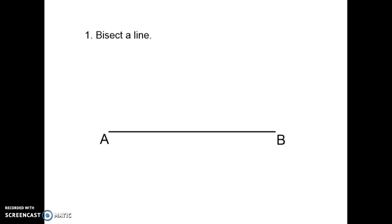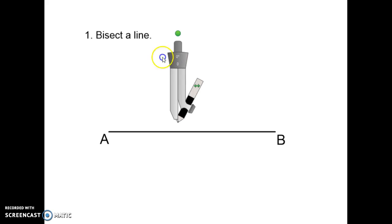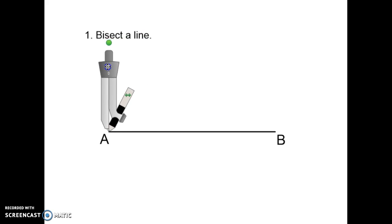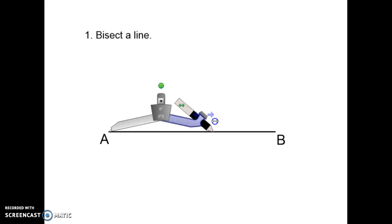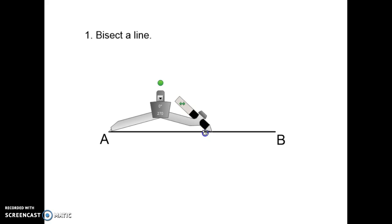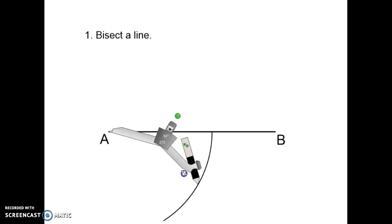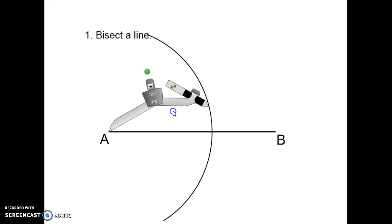Bisecting a line: in your exam question you typically get given a line. The ends might be lettered, like this one is AB. Take your compass, place it on one end of the line, and open it to beyond halfway. Exactly where doesn't matter so much, but it needs to go past half the length of the line, which you can judge by eye. Then draw an arc.